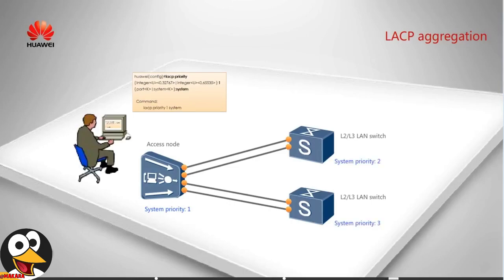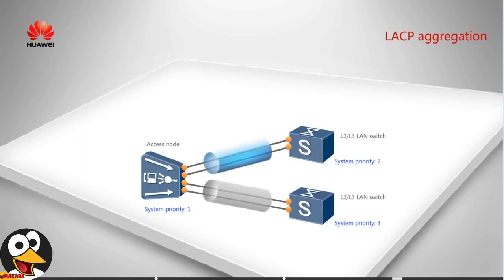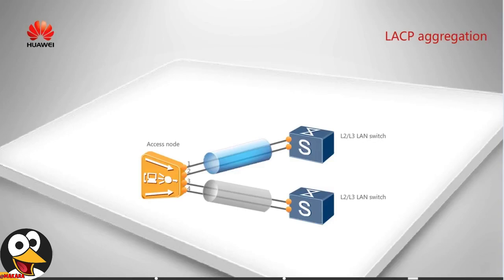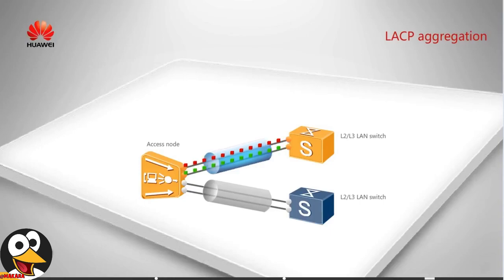For example, if the system priority of the access device is set to 1, the system priorities of the upper layer devices should be 2 and 3, because a smaller value indicates a higher priority. After such configurations, the access device with the highest priority is selected as the actor among the interconnected devices. The actor determines the active upper layer device according to port priorities on the access device, such as priority 1, 2, 3, or 4, where a smaller value also indicates higher priority. After configuration, the two interconnected devices will transmit packets through the links, with the aggregation group of the active upper layer device carrying services, while links in the standby upper layer device's aggregation group are blocked.